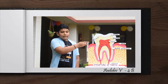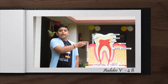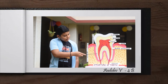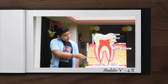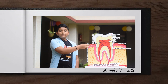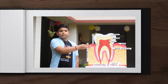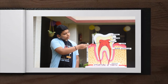The dentine is the layer that is present under the enamel. It is light yellow in color and extends into the root. The pulp is the innermost layer of the tooth. It contains nerves and blood cells.